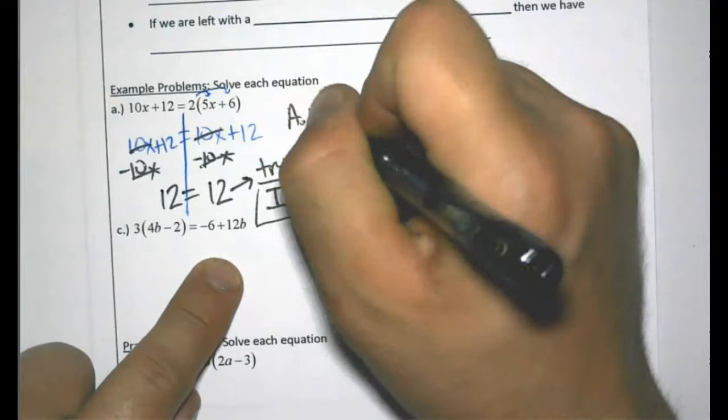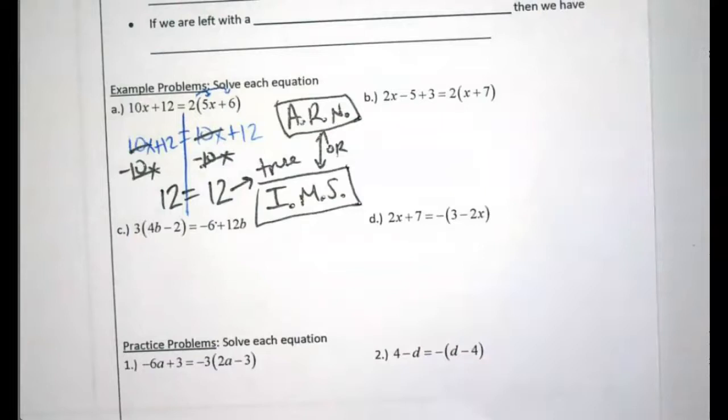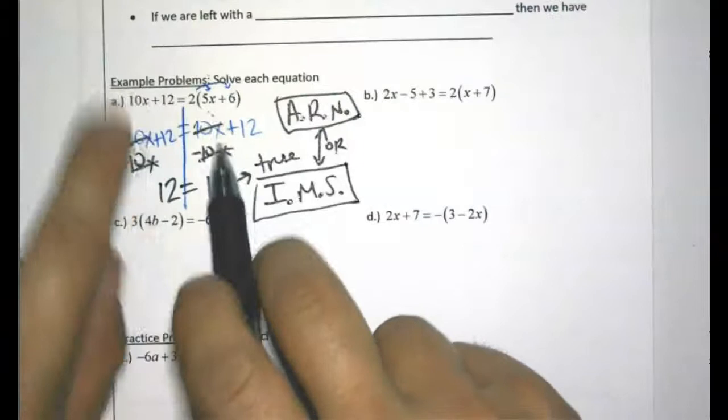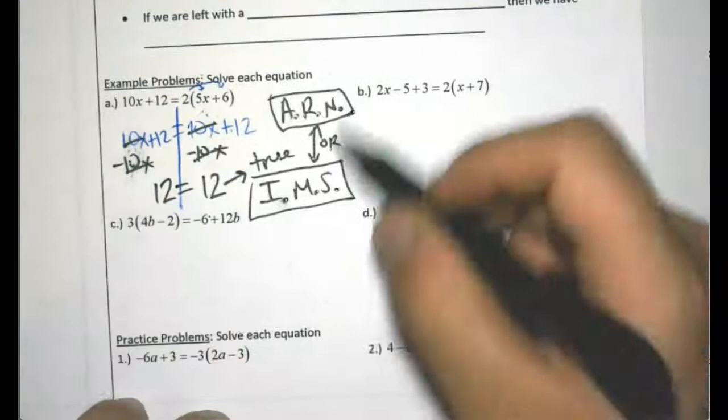The essential question is: how do you get a solution when variables zero out? If the final statement is true, you say all real numbers or infinitely many solutions — ARN or IMS. If it's false, you answer no solution. 12 equals 12 is definitely true, so the answer is infinitely many solutions, or all real numbers — either is acceptable. That just means you could plug in any number for x and both sides of the equation will always stay equal.